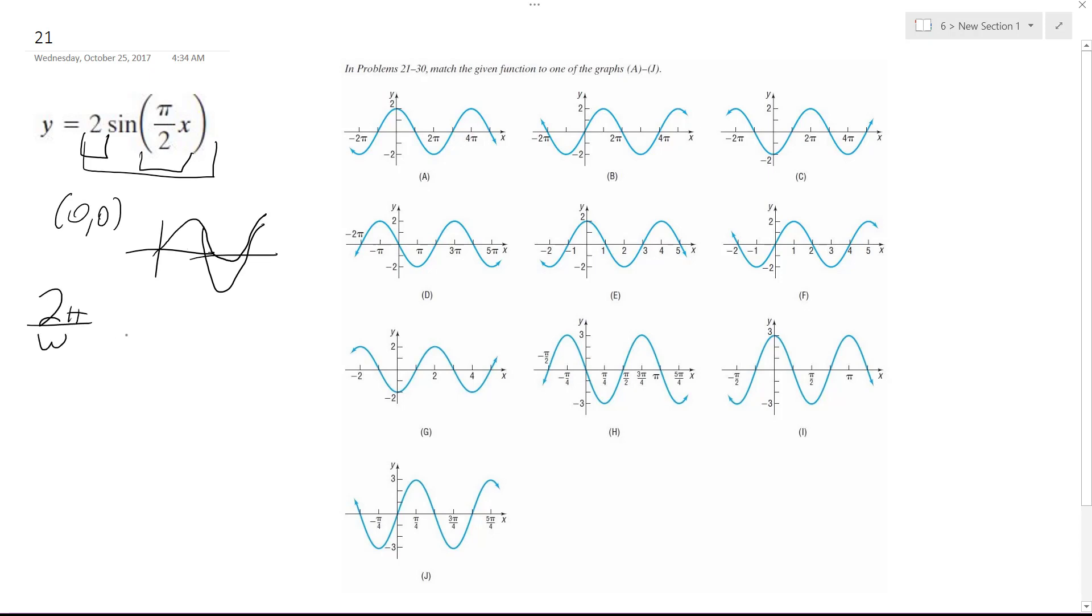So in this instance it's 2π divided by π/2, which is equal to 2π times 2 over π. The π's cancel out and we get 4, so it's got a period of 4.